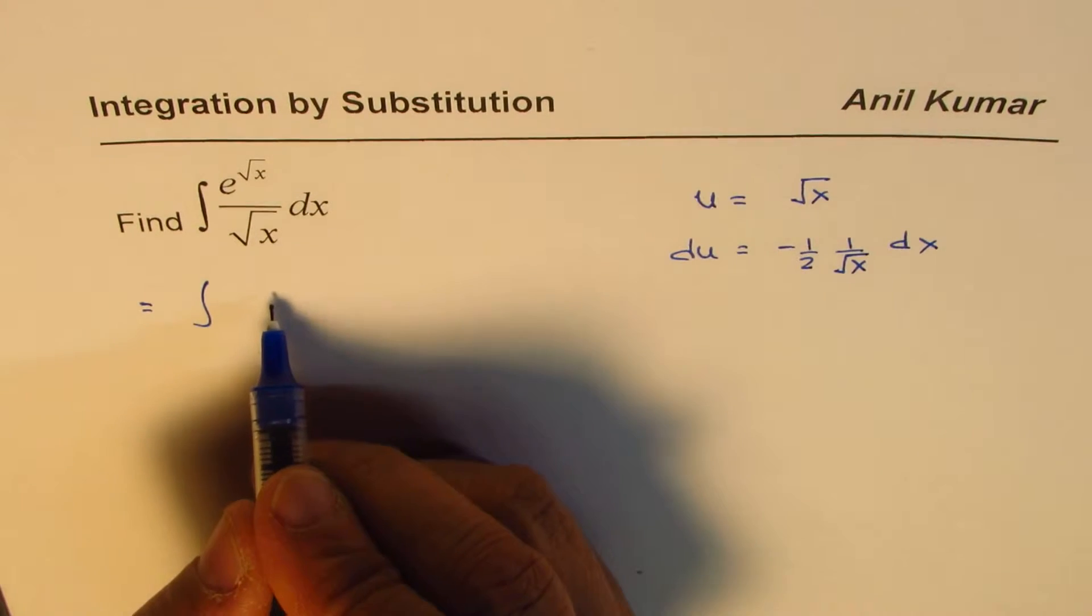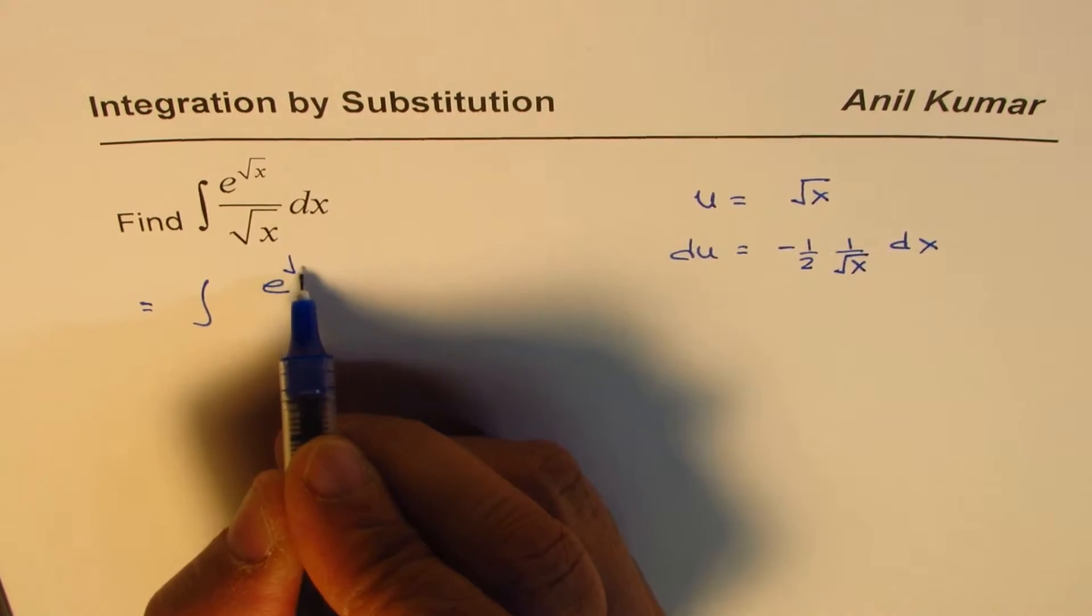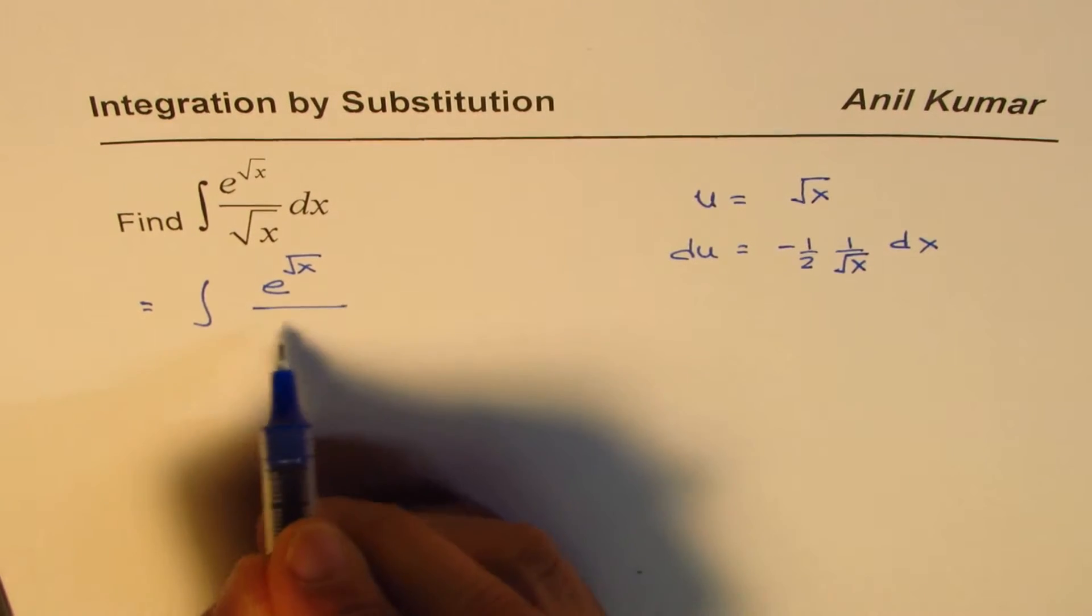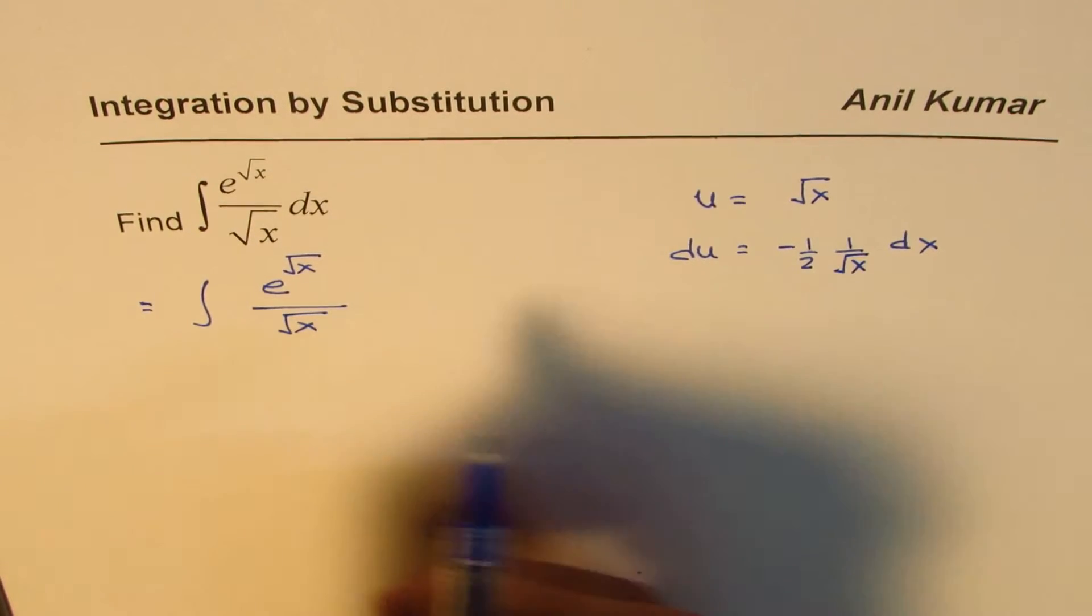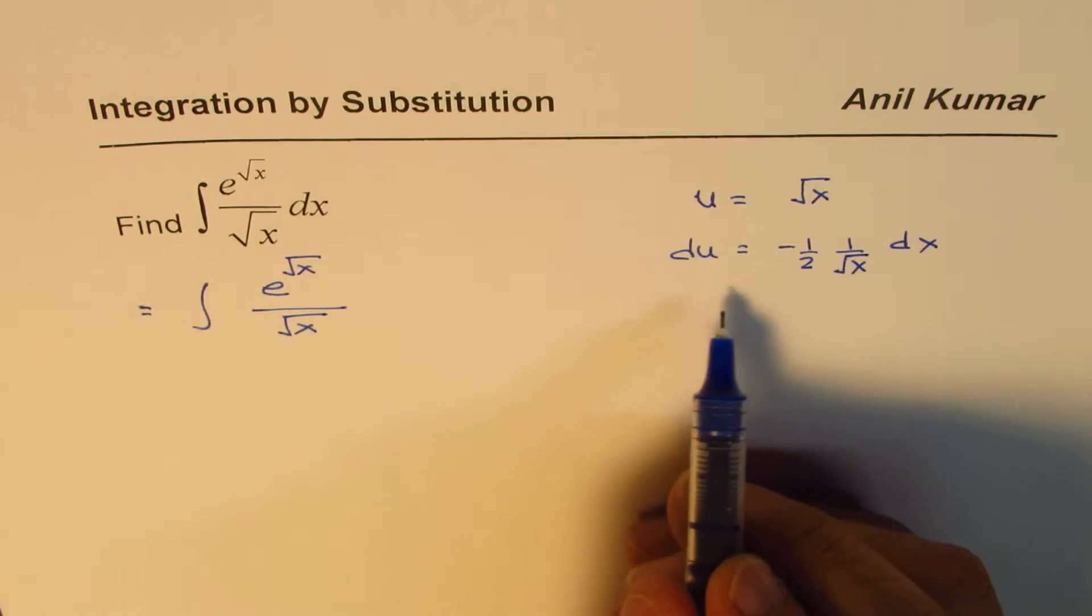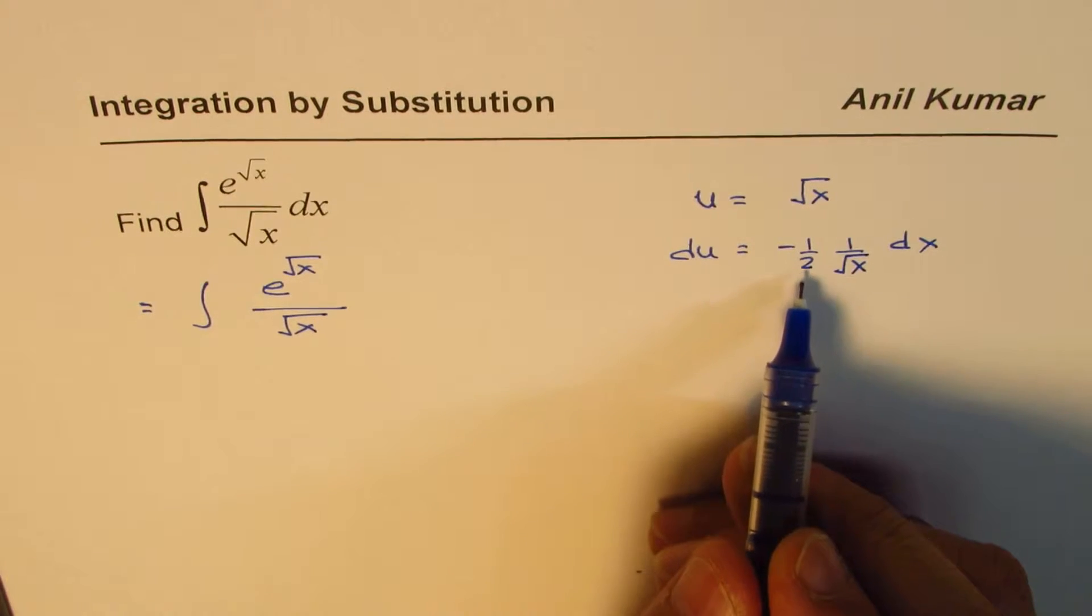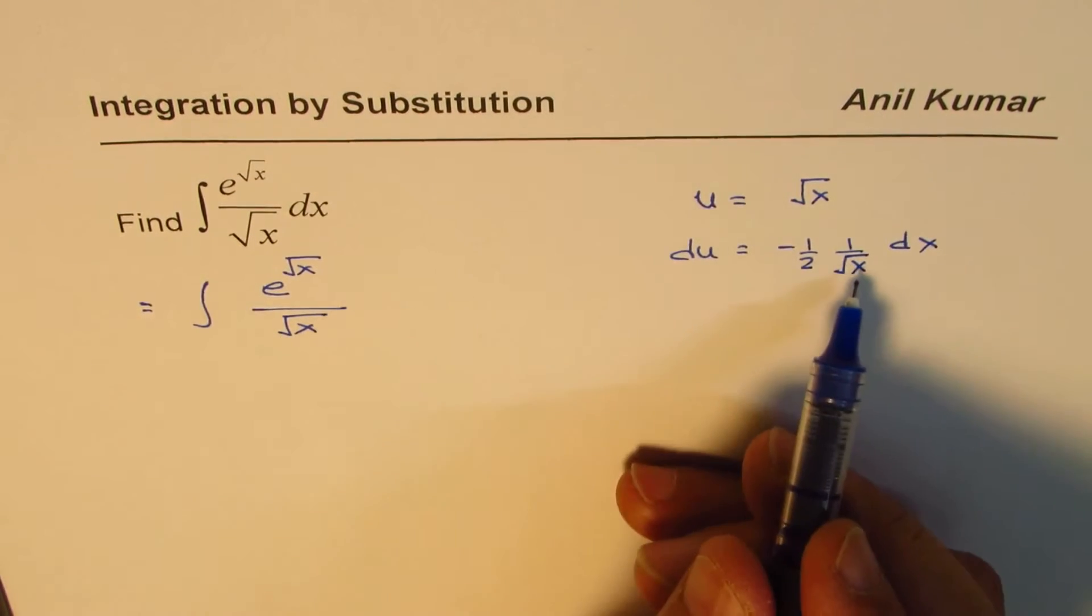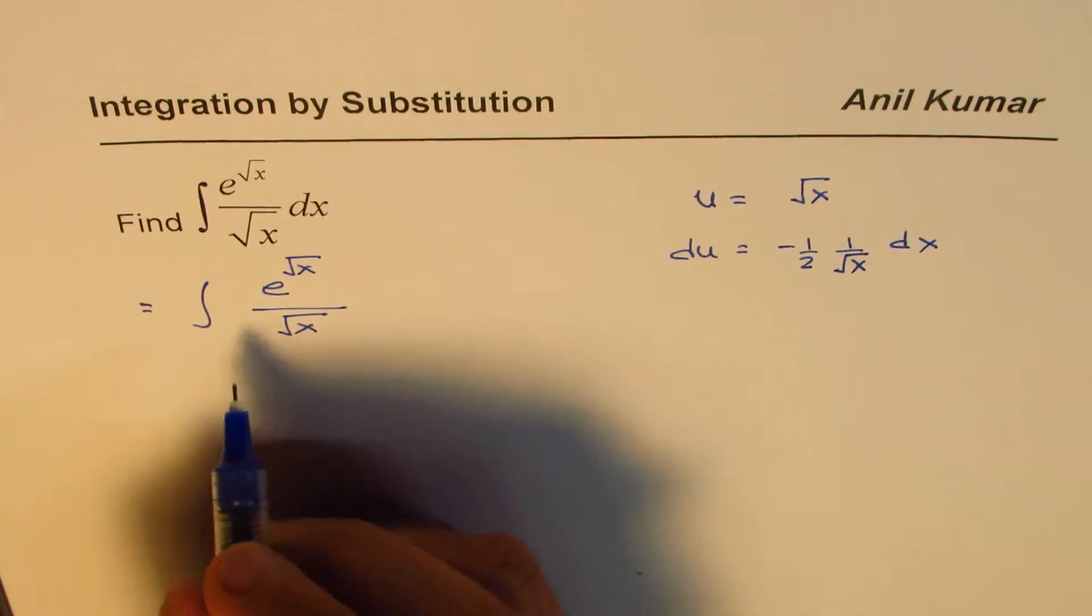We have e to the power of square root x in the numerator, and in the denominator we have square root x. Now we know dx could be, so we need minus half. We could multiply and divide by 2 and a negative sign to get the result. So we could do that.